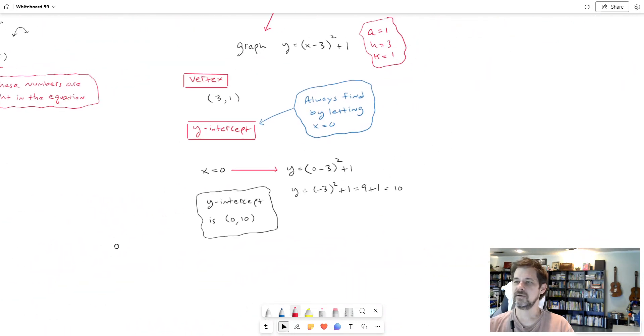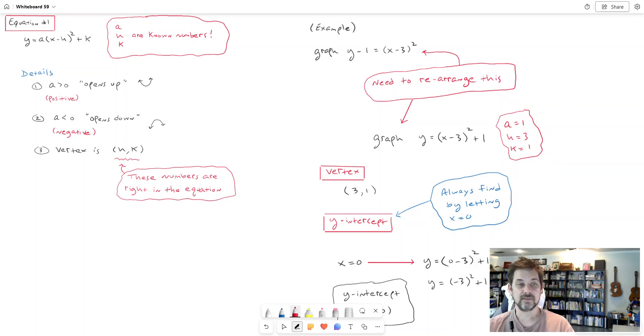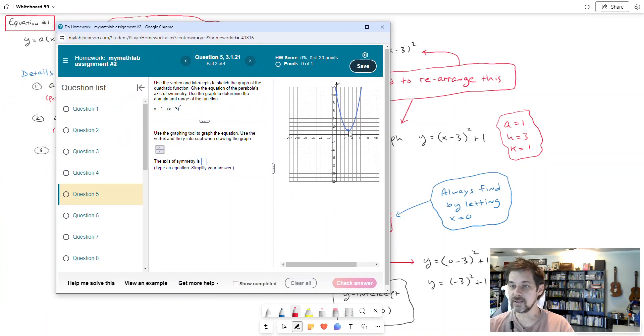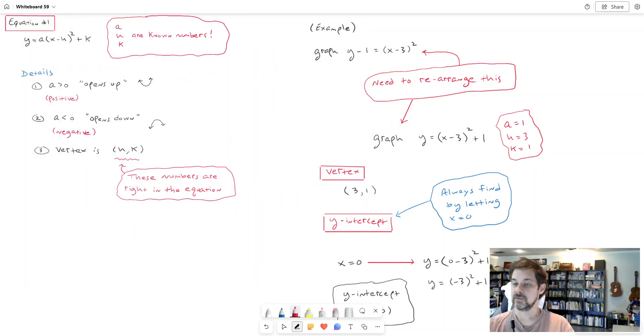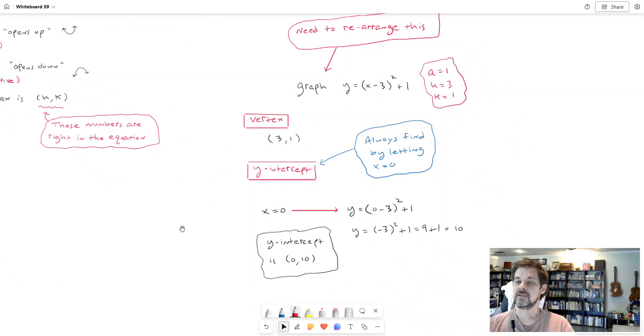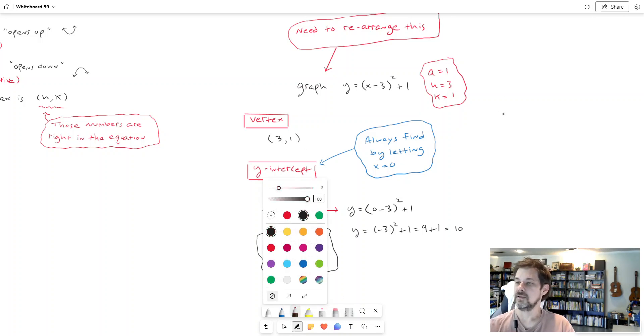but they're symmetric about the vertical line that goes through the vertex. It cuts it in half with a mirror image of itself on either side. That line, that red dashed line is called the axis of symmetry. So how do we specify that? I mean, I can see what the axis of symmetry is, that line right there that goes through the middle that goes through the vertex, but how do I express it? How do I tell you what it is?